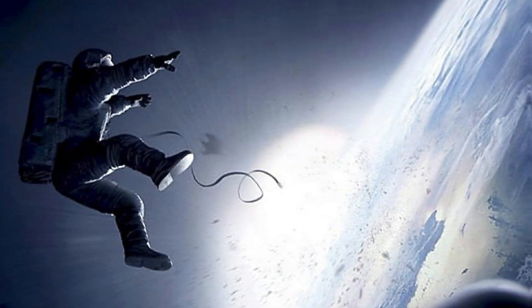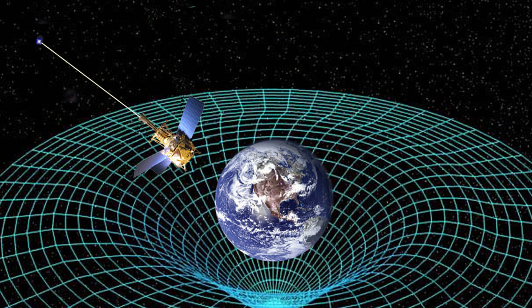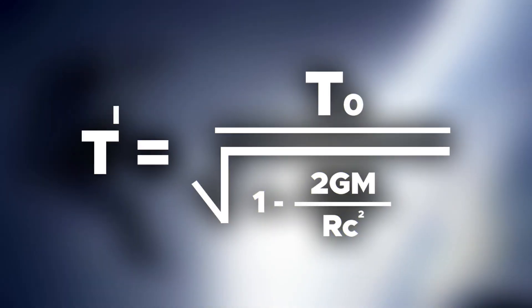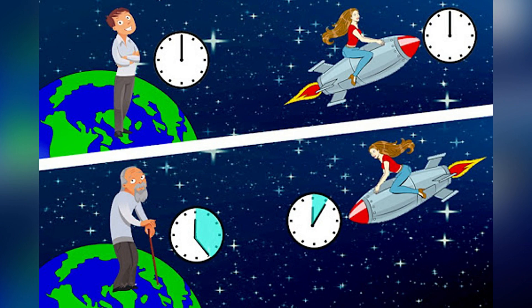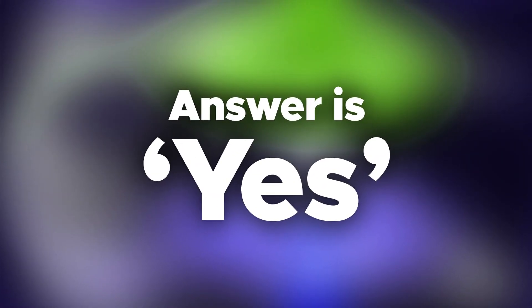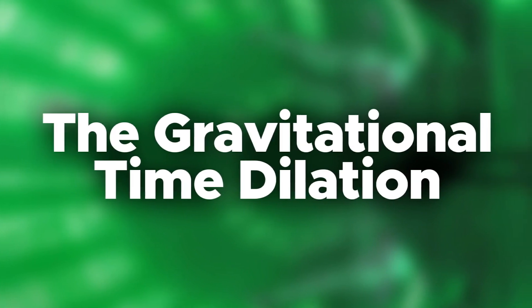Einstein thought that time is a dimension and space-time is like a sponge. Heavier objects cause a greater change in space-time, meaning time is inversely proportional to the mass of the object. The formula is: T' = T₀ × √(1 − 2GM/rc²). Think about the 1969 Apollo launch — was the twin paradox active at that moment? The answer is yes. But the relativistic time dilation is more effective than gravitational time dilation.